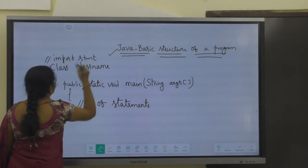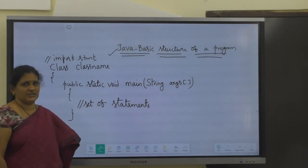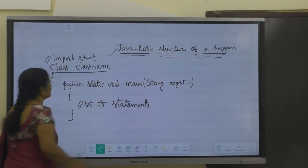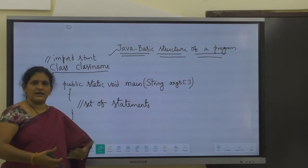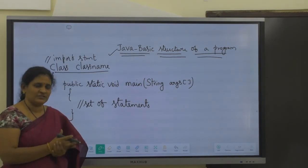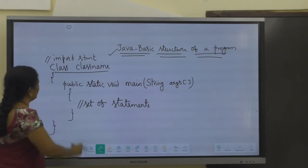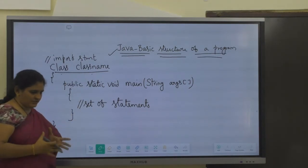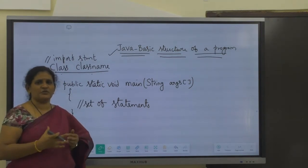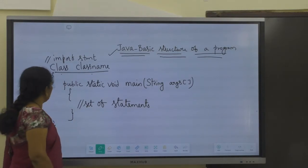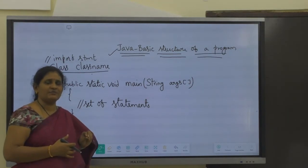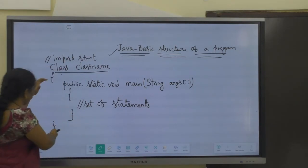The first statement in your Java program will always be an import statement if you are importing any libraries — that part we will speak later in later classes. After that, a Java program starts with the class keyword followed by the class name. Whatever variables or methods or logic you are going to write, all those need to be enclosed within the class.